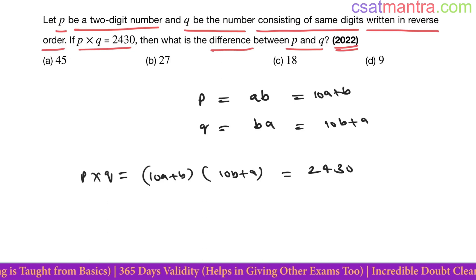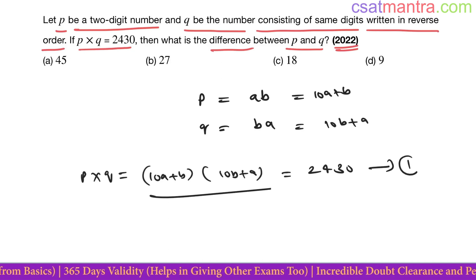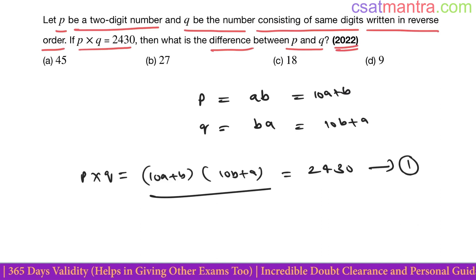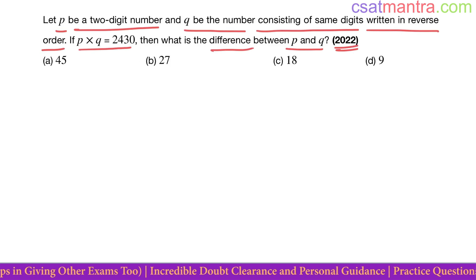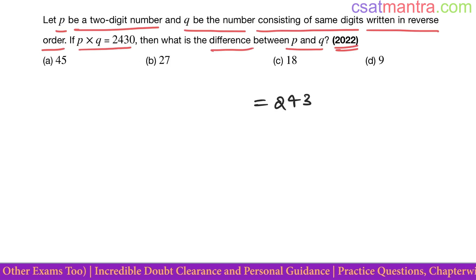Two variables, only one equation. That means this problem has to be solved by trial and error. Now we have 2430 at right-hand side. Trial and error doesn't mean that you take any two numbers and see.